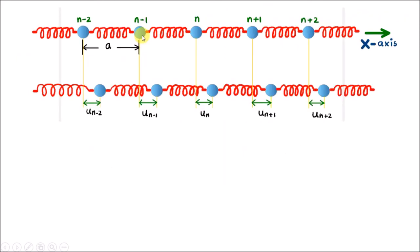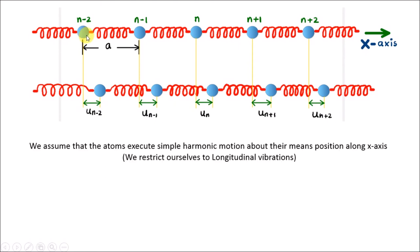Under equilibrium condition, all atoms will be separated equally by an interatomic distance a. Each atom undergoes simple harmonic motion. We assume that these atoms are executing simple harmonic motion about their mean positions along the x-axis, meaning we are restricting our problem only to longitudinal vibrations. These atoms can also vibrate perpendicular to the direction of the chain, which would lead to transverse vibrations, but we are restricting our problem to longitudinal vibrations only. We are trying to find what kind of waves are generated due to these longitudinal vibrations within this linear monoatomic solid.